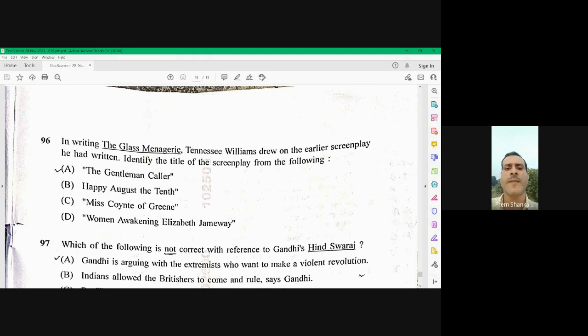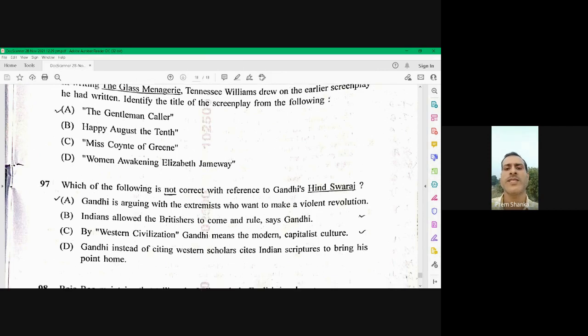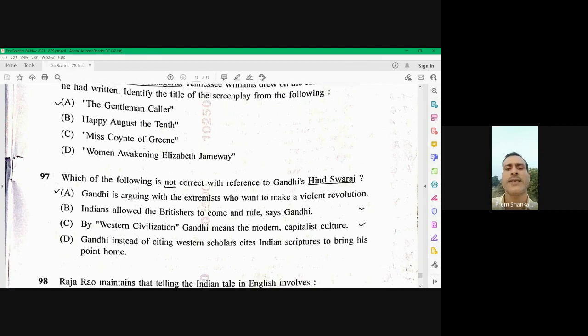Question number 97. Which of the following is not correct with reference to Gandhi's Hindu Swaraj? As you know, Gandhi's Hindu Swaraj was published in 1909 where Gandhi is arguing about the different arguments. Whereas A option, Gandhi is arguing with the extremists who want to make a violent revolution is not correct. So the right option here is 97A. A is the right option for 97.